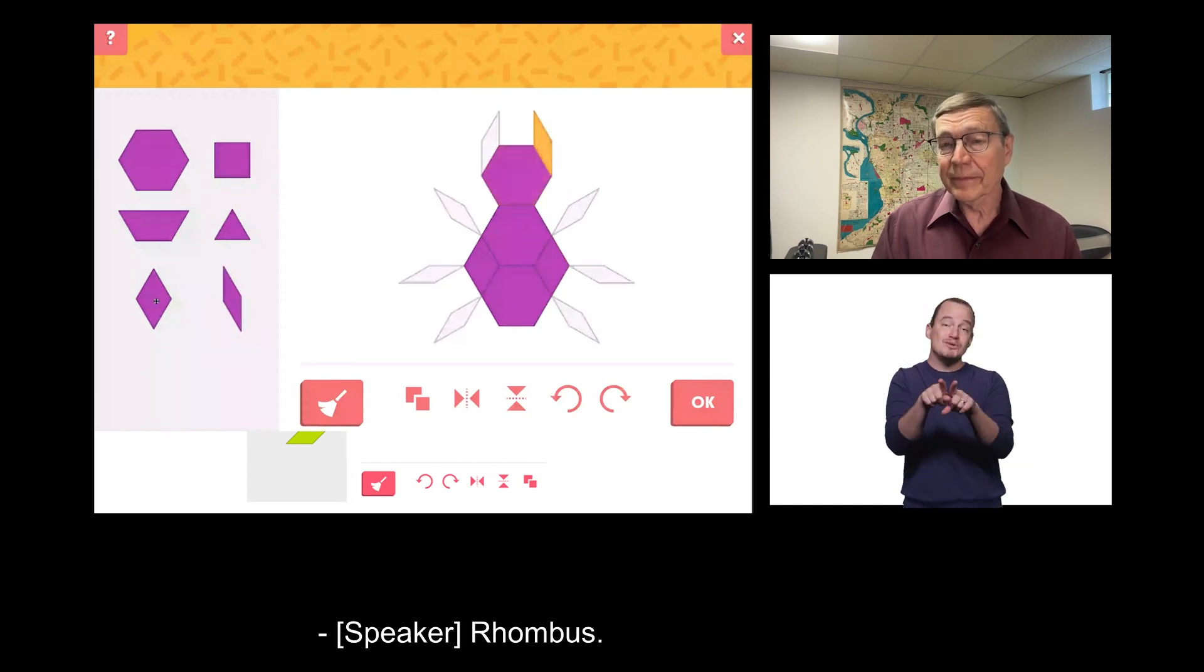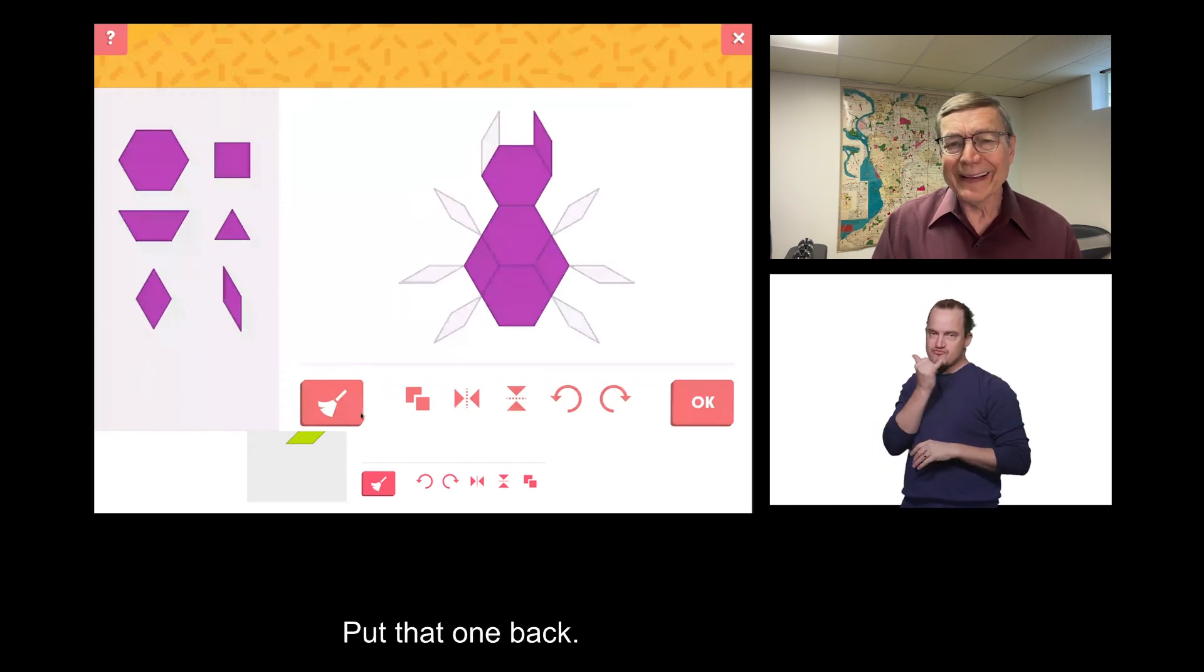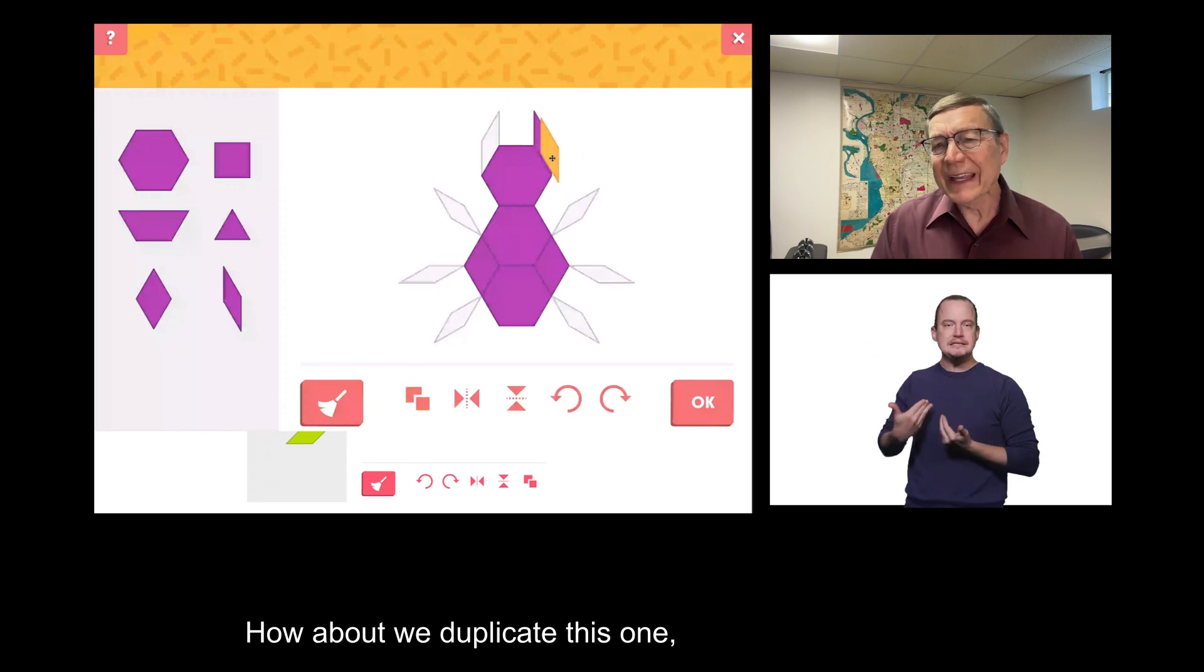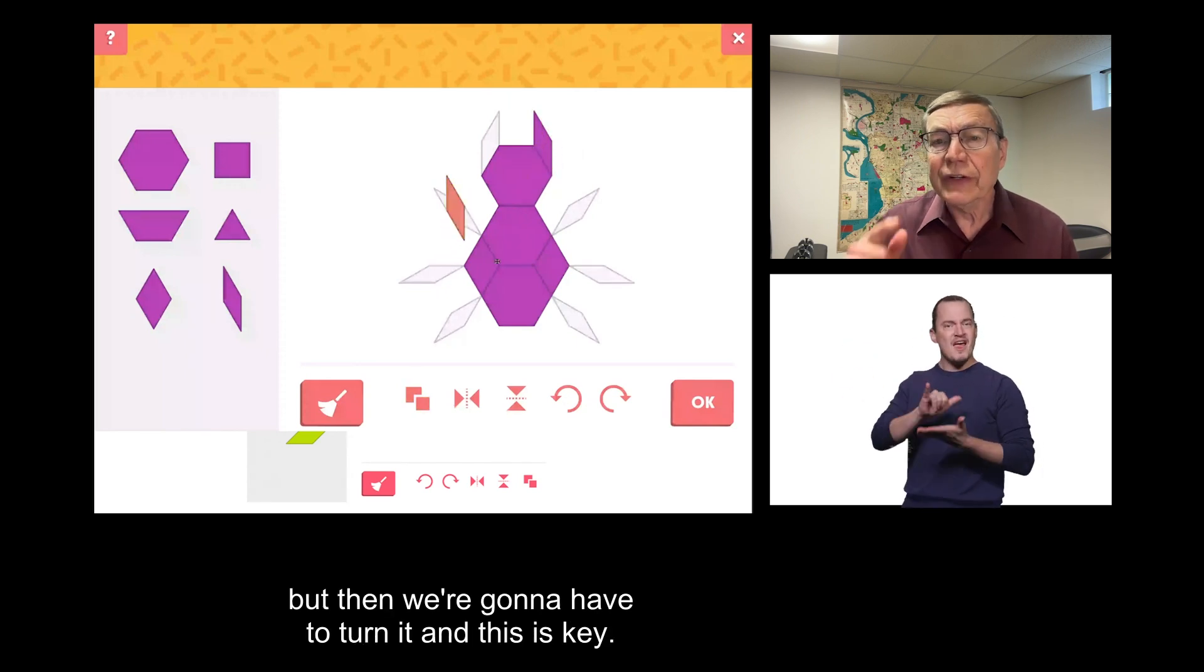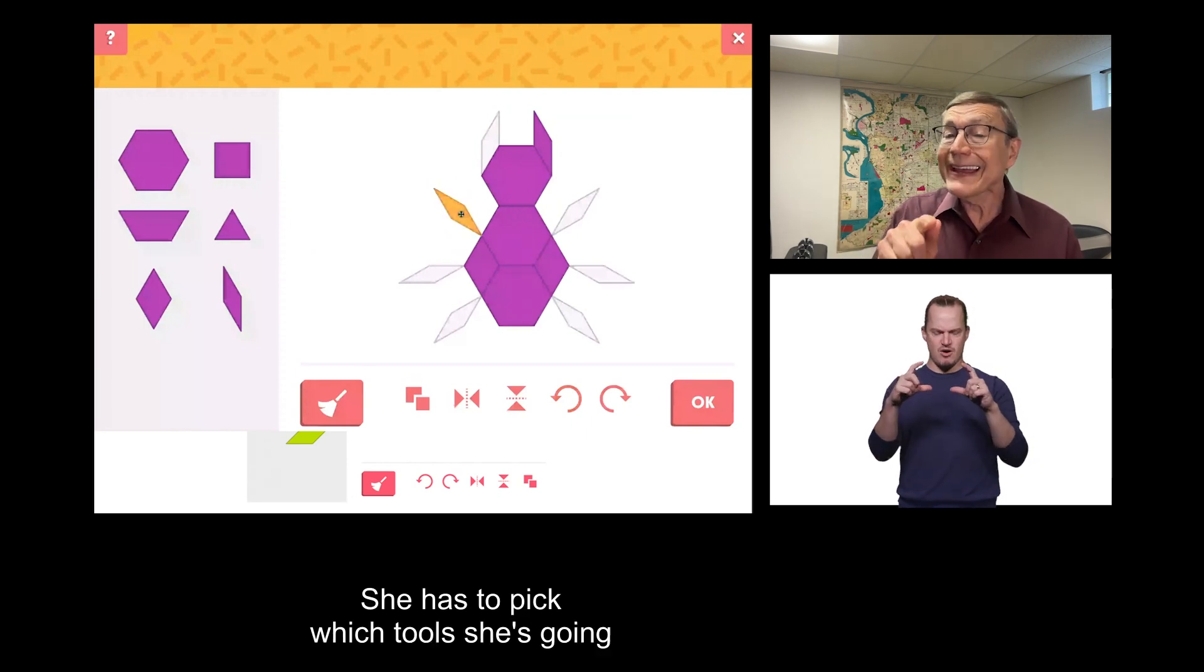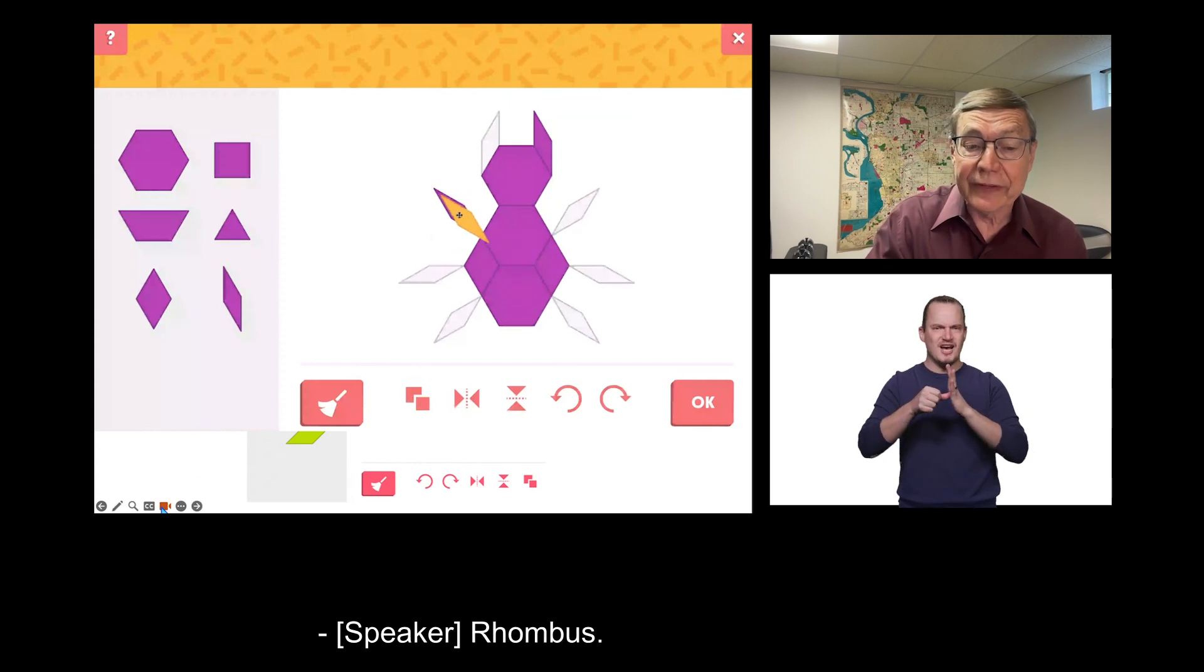Rhombus. Rhombus. Oh, wrong pick. Put that one back. How about we duplicate this one, but then we're going to have to turn it, and this is key. Did you see? She has to pick which tools she's going to use next.